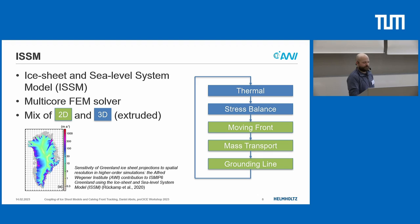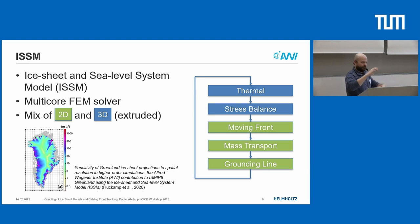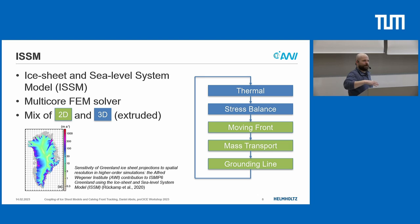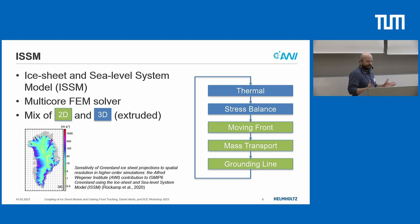ISSM solves all these problems — which are partial differential equations — with a finite element method. Some are three-dimensional, like the thermal and stress balance, solved over the full volume of the ice. Others like the front tracking are done in two dimensions. The three-dimensional mesh is derived from the two-dimensional mesh by extrusion — basically copies of the 2D mesh in the vertical direction. Using ISSM, you can do continental scale simulations, for example computing ice velocities of the entire Greenland ice sheet at very fine resolution.